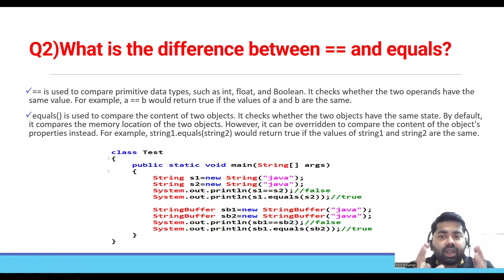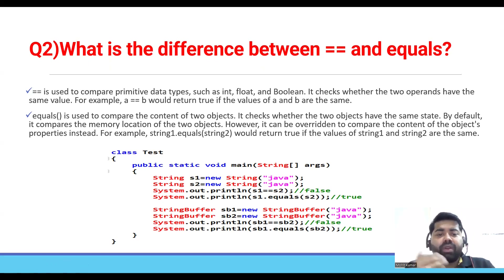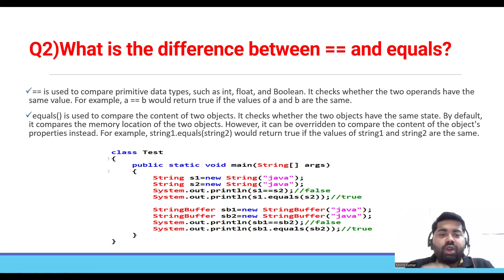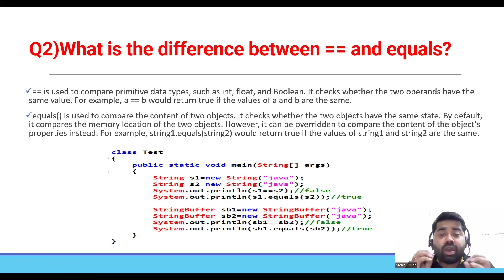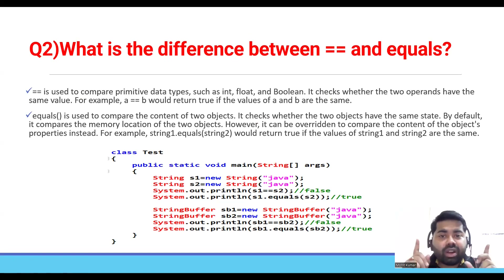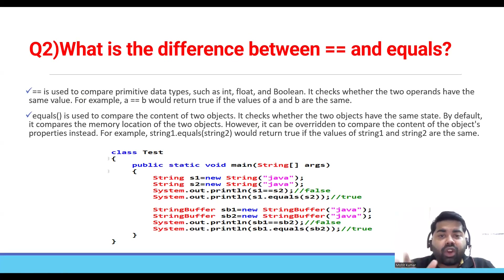The second question is: what is the difference between the double equal operator and the equals method? The double equal operator is used to compare primitive data types such as integer, float, and boolean. It checks whether the two operands have the same value. For example, if you compare a == b, it will return true if the values of a and b are the same — it returns a boolean, true or false only.